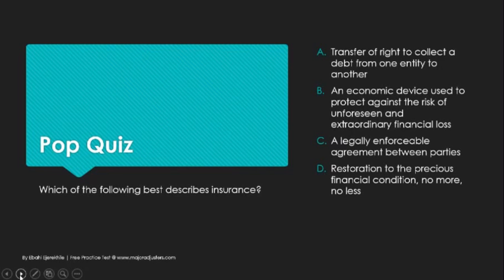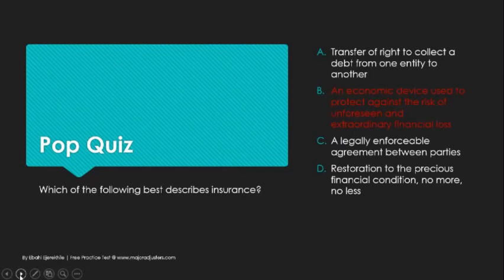Which of the following best describes insurance? Your answer here is going to be B — an economic device used to protect against the risk of unforeseen and extraordinary financial loss.